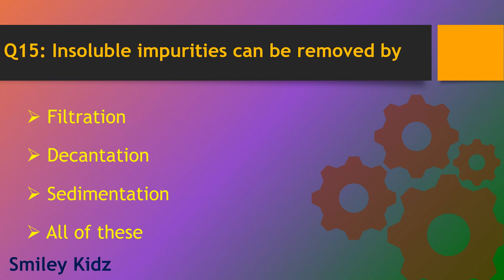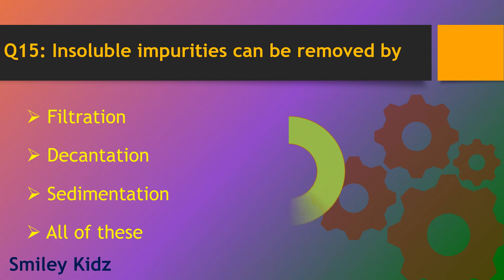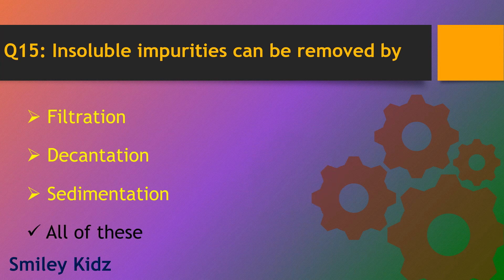Question number 15. Insoluble impurities can be removed by which method? Options are filtration, decantation, sedimentation and all of these. The right answer is all of these. Insoluble impurities can be removed by filtration, decantation and sedimentation.